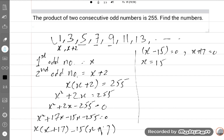So x is equal to 15 and x is equal to minus 17. Minus 17 is an impossible value. So the first odd number is 15. Second odd number will be obviously 17. X plus 2, 15 plus 2 is equal to 17. So this is the required answer.